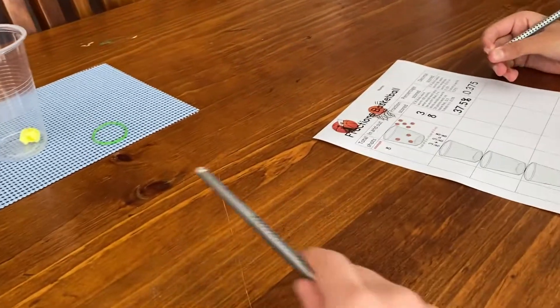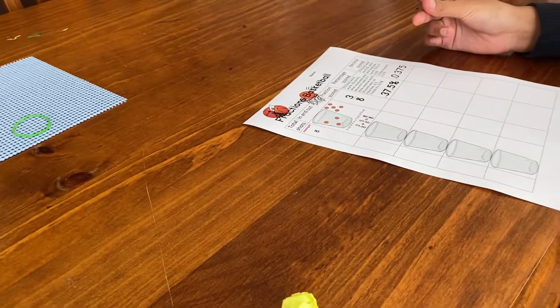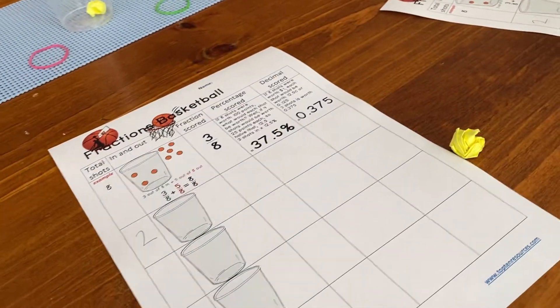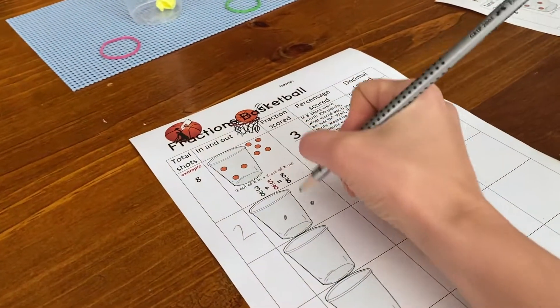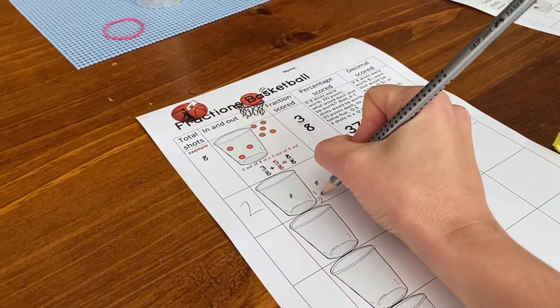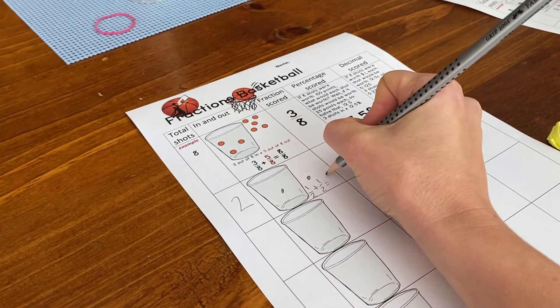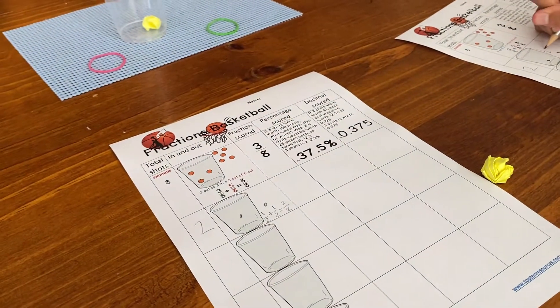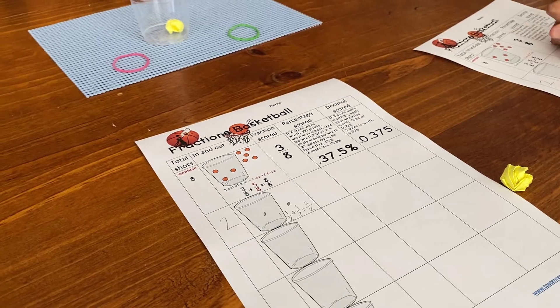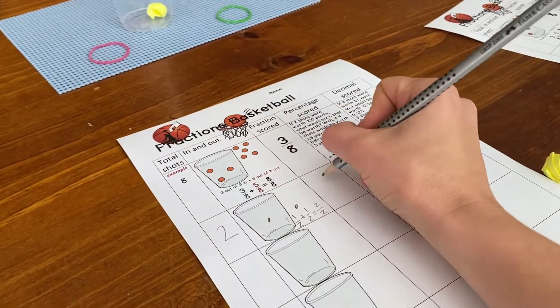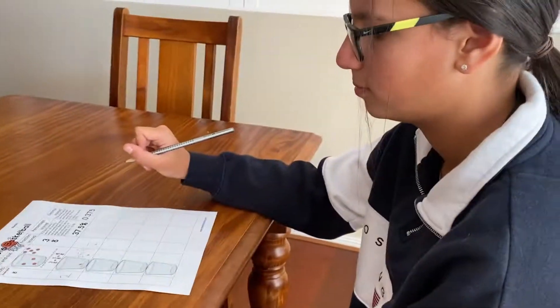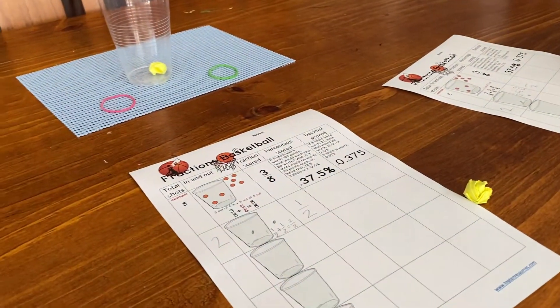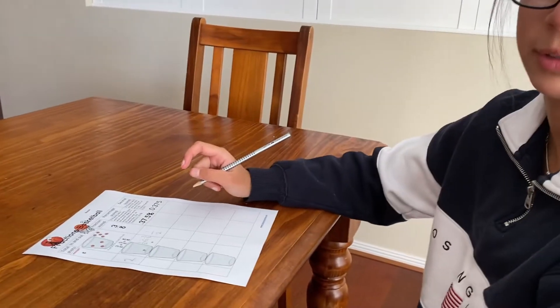First we remind ourselves how many we shot all together - that's two. We always write that down in the first column so we don't forget what the fraction was. Then we draw how many we got in and how many we got out, and write the fraction as an addition. Half in plus half out equals two over two, or one. We scored half, and half the balls is the same as saying fifty percent.